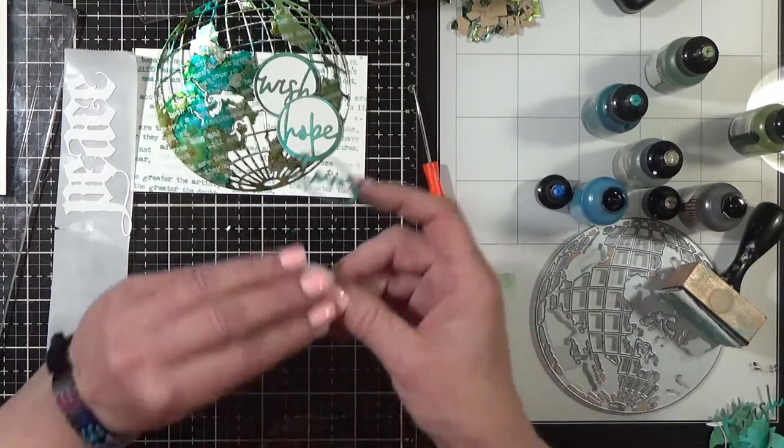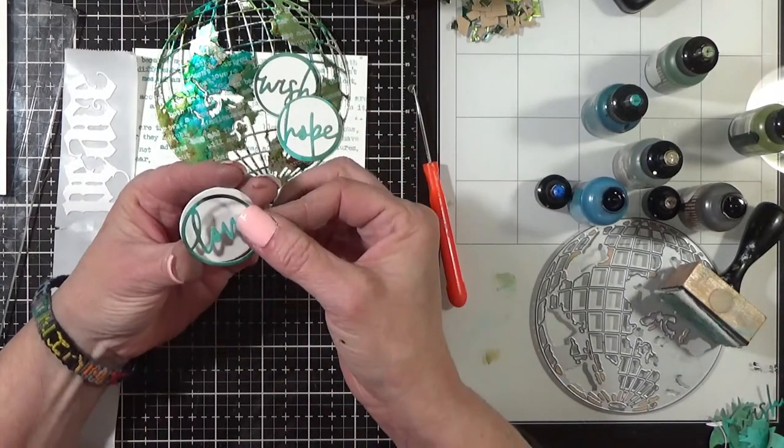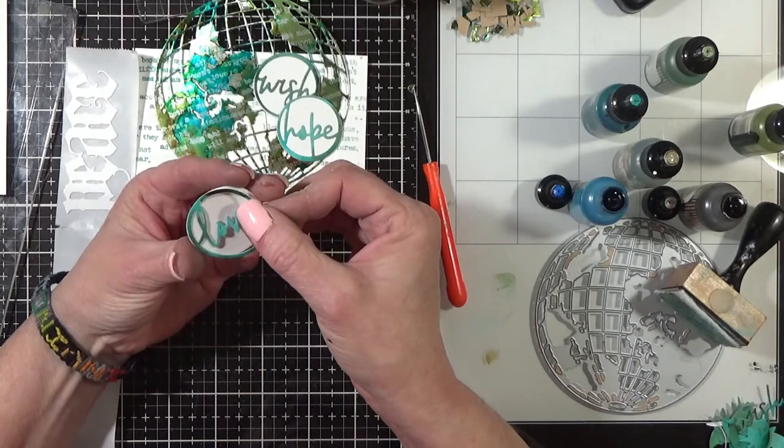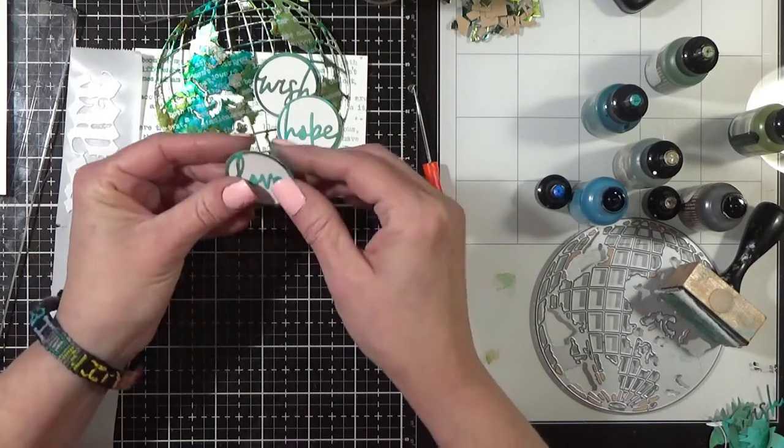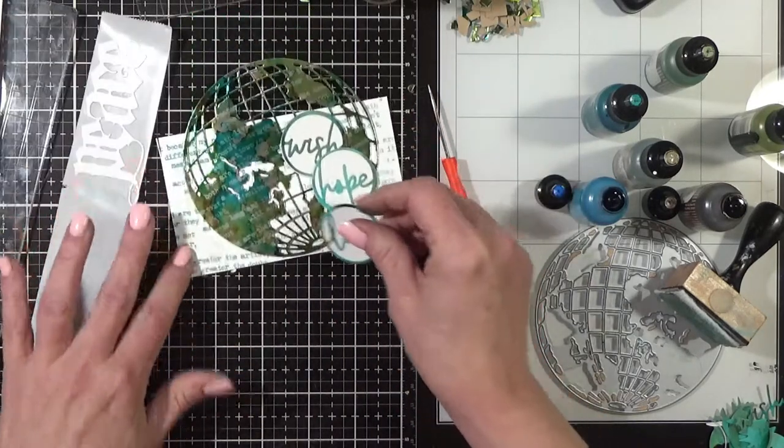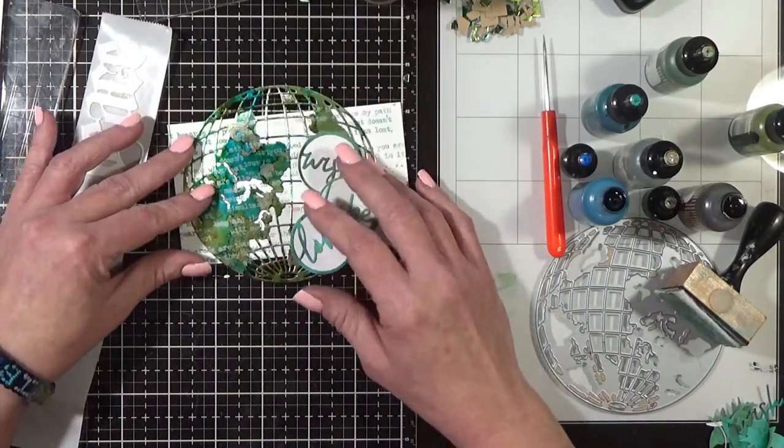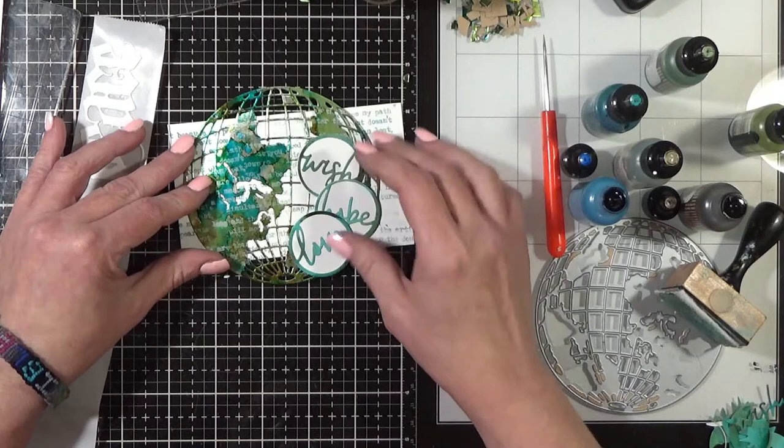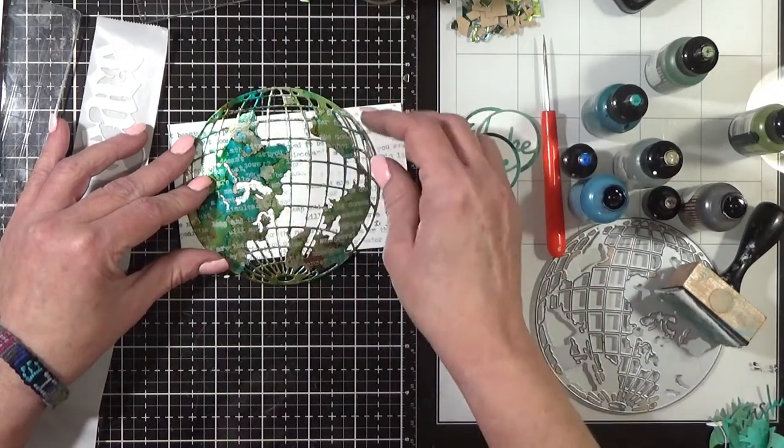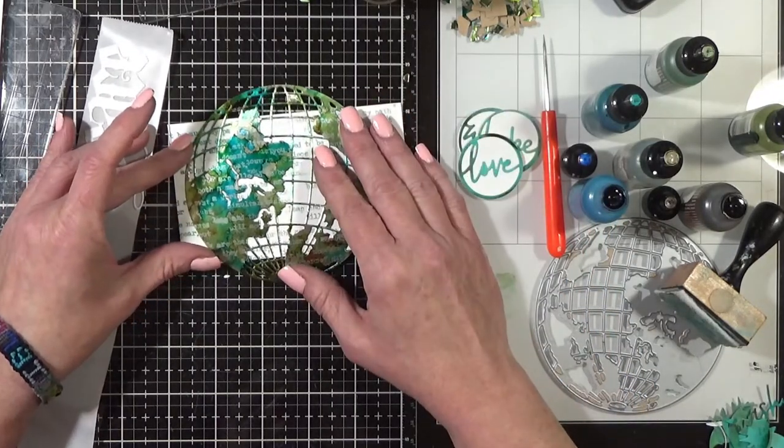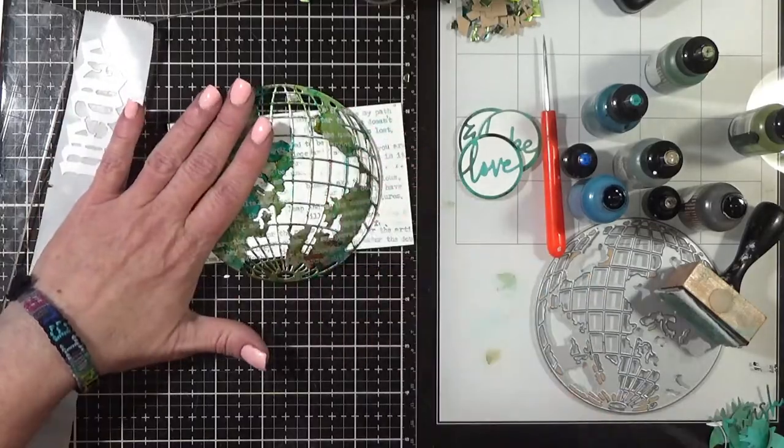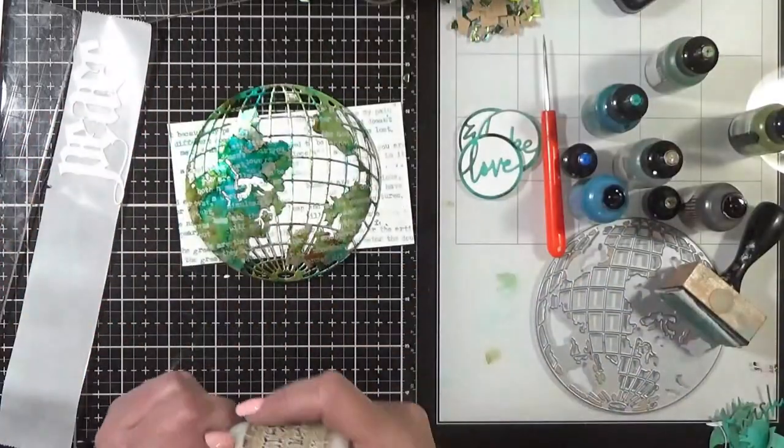Might need to get a square element in there, it's looking all too round. So let's get this cut down, I'm thinking I like it probably right around here. So let's get it glued down and then we'll cut off.